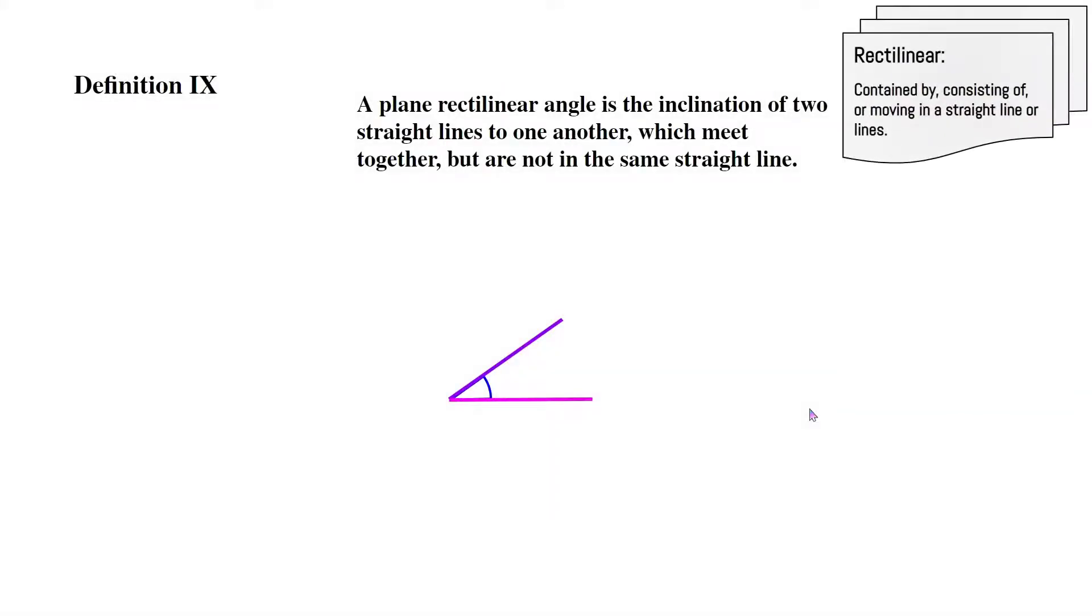Now definition 9. A plane rectilinear angle is the inclination of two straight lines to one another, which meet together, but are not in the same straight line. Now rectilinear means contained by, consisting of, or moving in a straight line or lines.